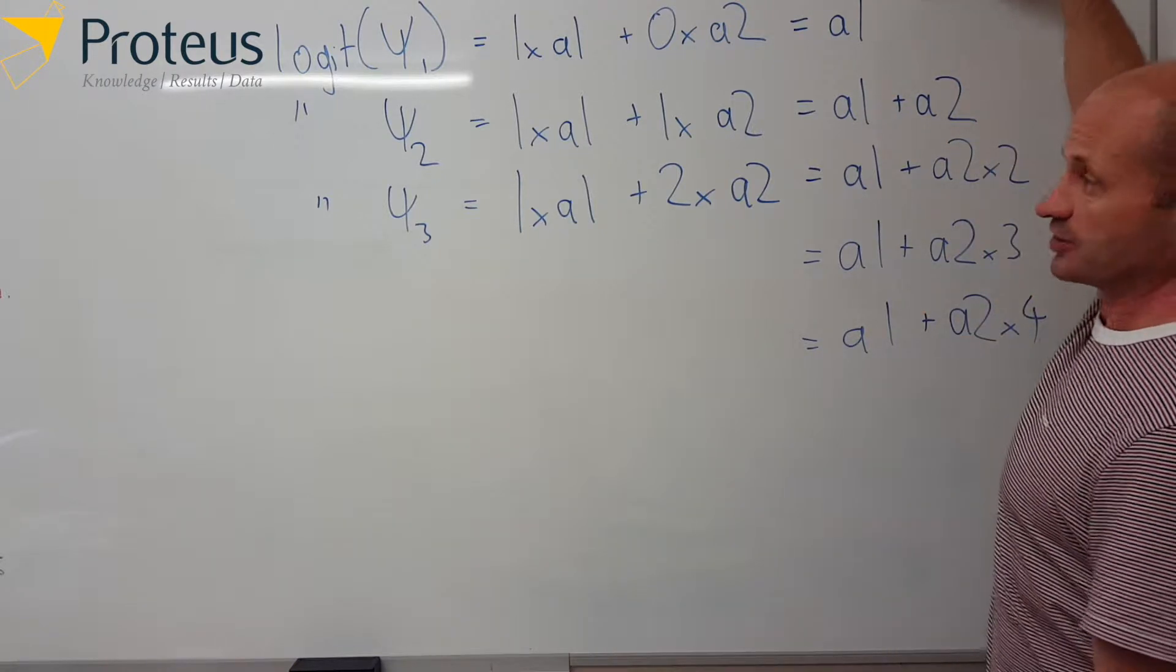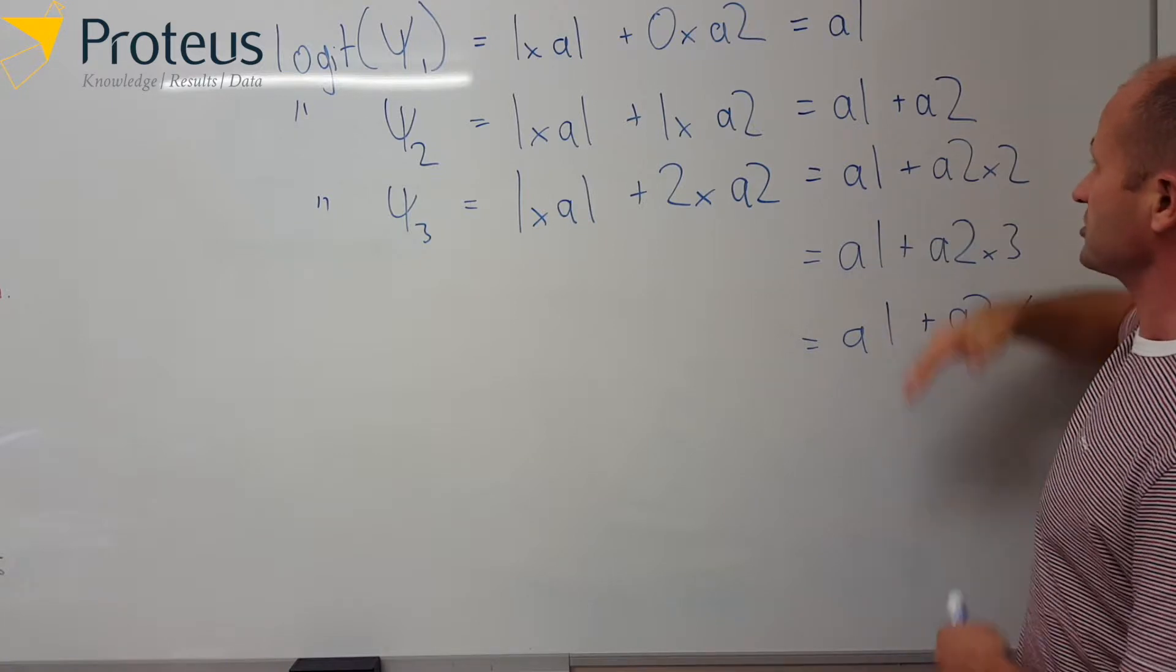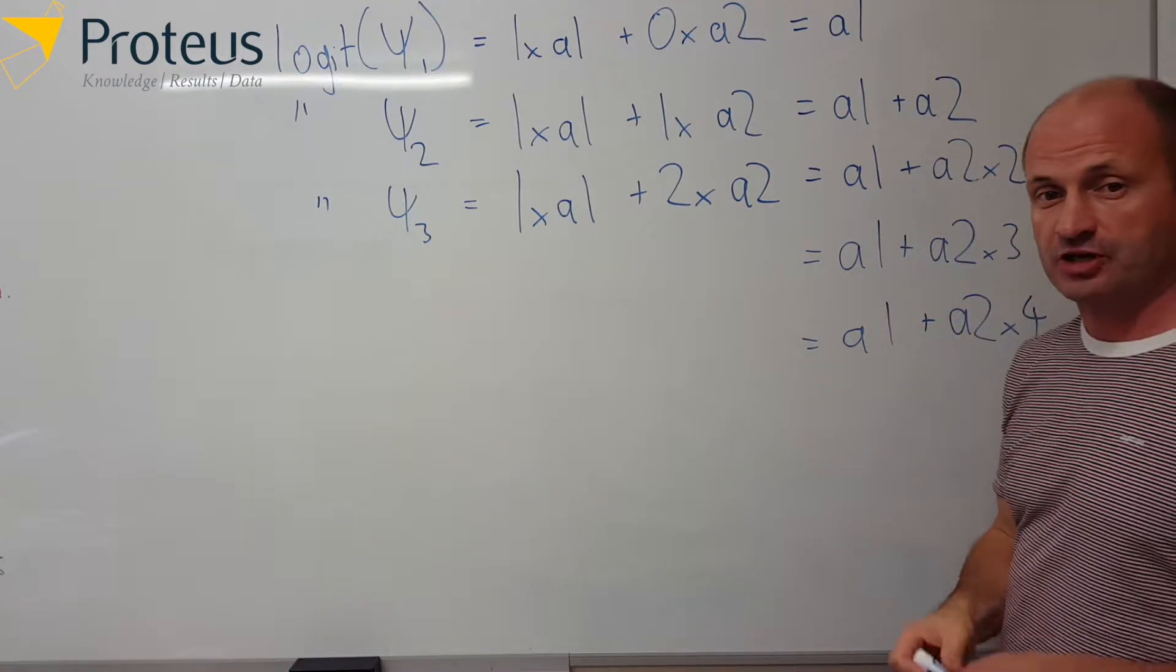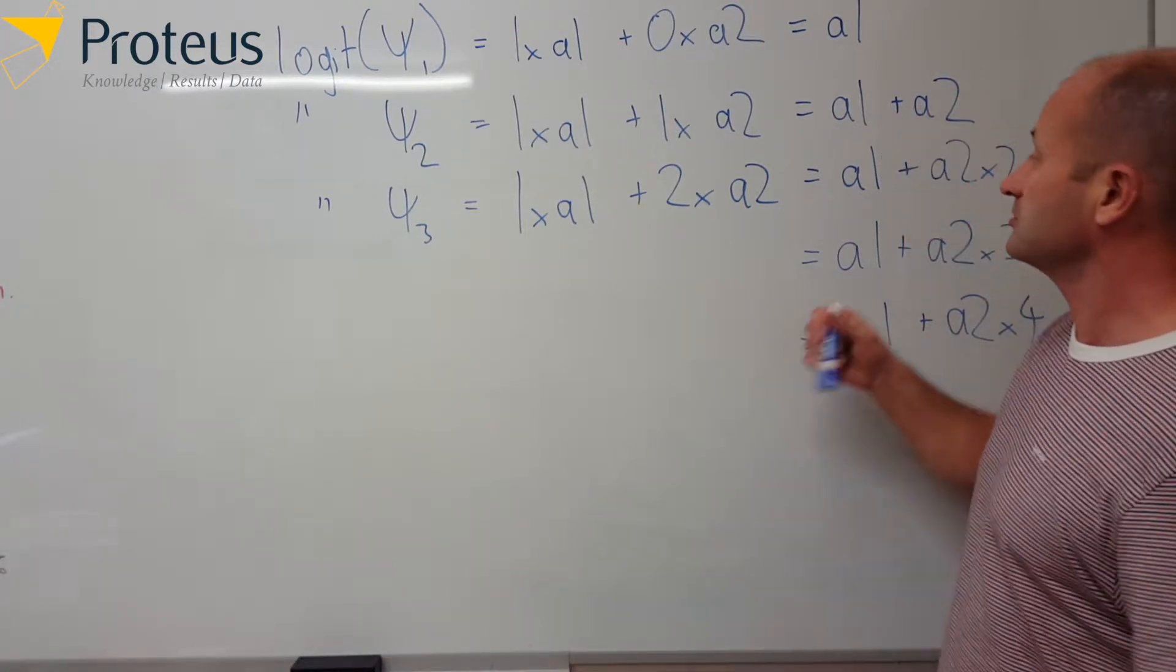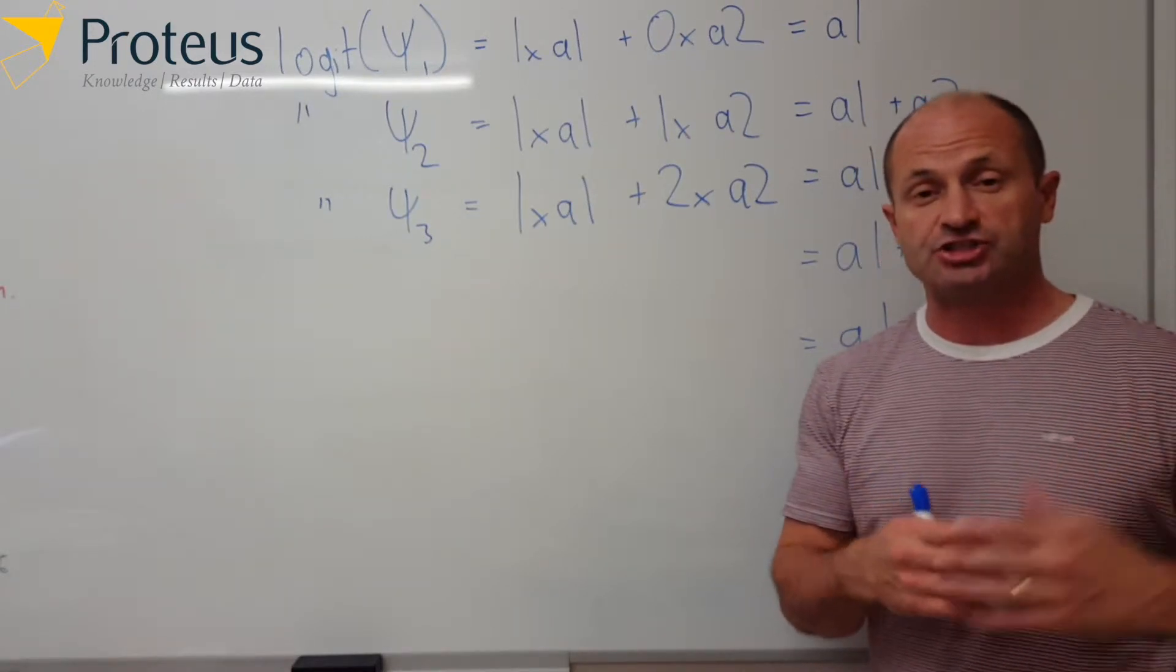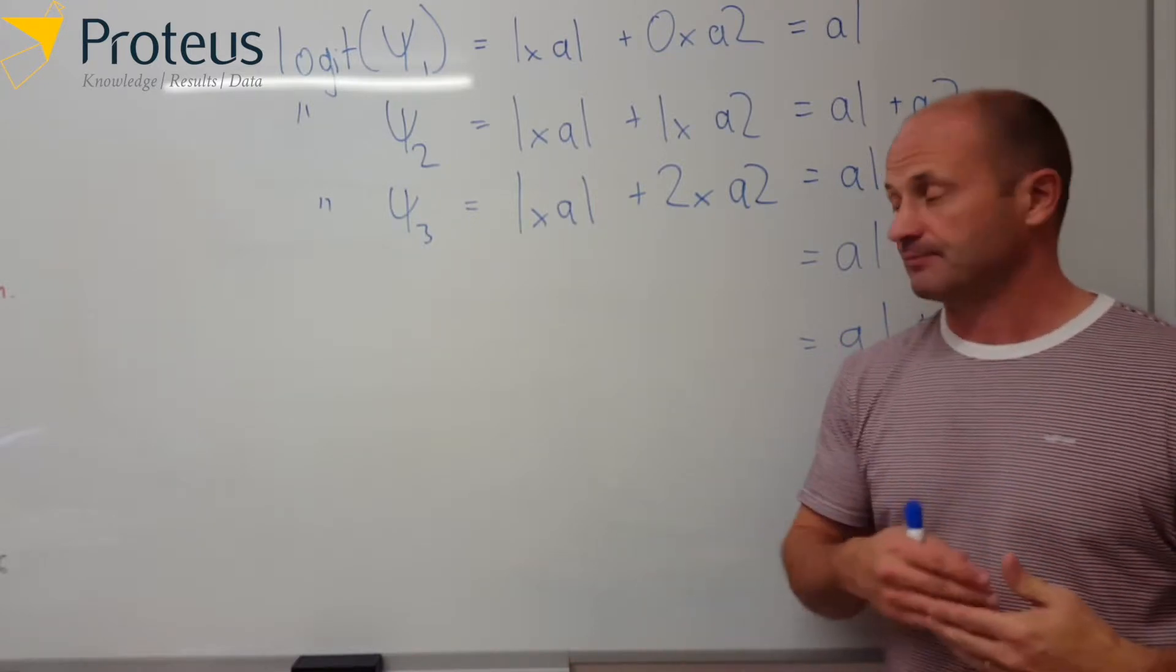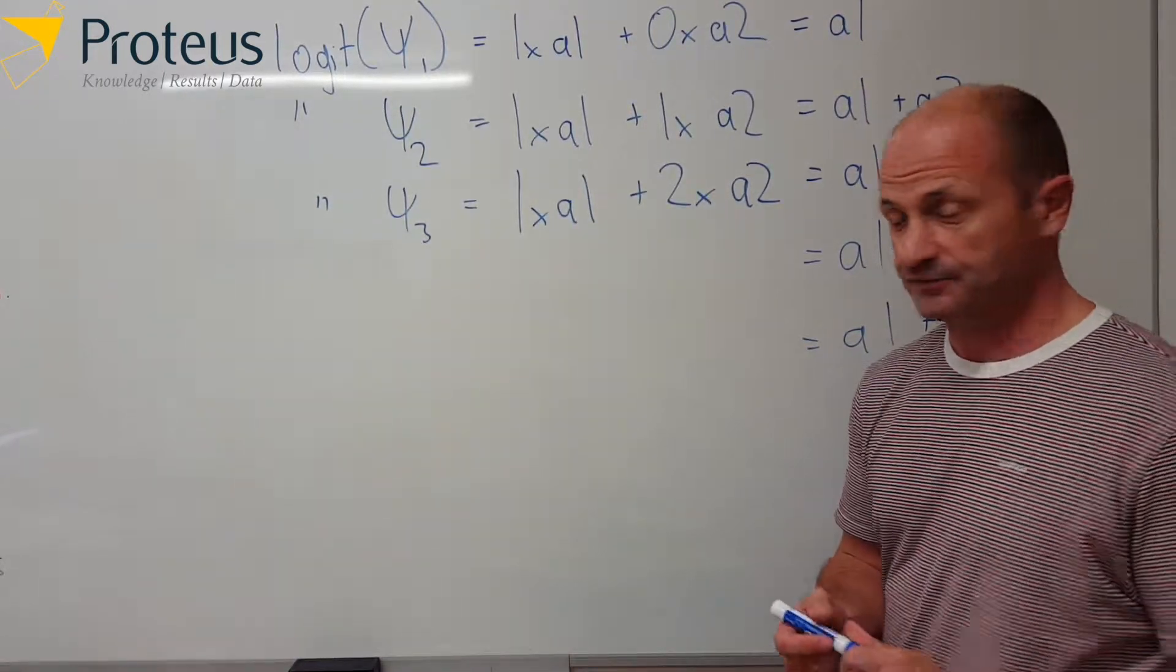Okay, so what we're doing if we look at this series of equations is that each row, we're just adding on an additional amount of a2. So for every one unit change in time, we are adding on an additional value for a2. So that means that occupancy is going to change by an amount a2 for every one season over time.